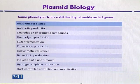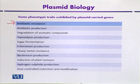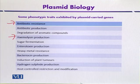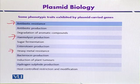Plasmid-encoded beneficial traits may include antibiotic resistance — which is also a parameter used in gene cloning to select recombinant transformants — antibiotic production, degradation of aromatic compounds, hemolysin production, sugar fermentation, enterotoxin production, heavy metal resistance, production of certain antibiotics like bacteriocins, induction of plant tumors, hydrogen sulfide production, and enzymes that mediate host-controlled restriction and modification.